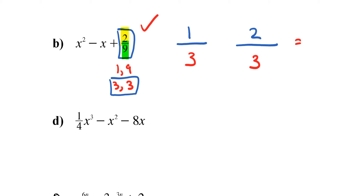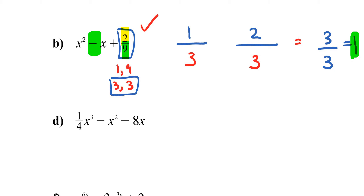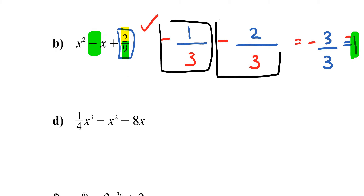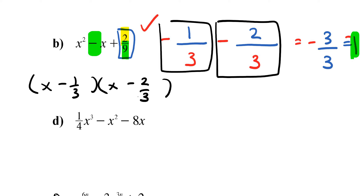Adding the fractions: 1 plus 2 is 3, and 3/3 gives me 1. But I actually need negative 1, so I just change both fractions to negatives, which gives negative 1. My fractions are negative 1/3 and negative 2/3. Two brackets: (x − 1/3)(x − 2/3), and that's my answer.